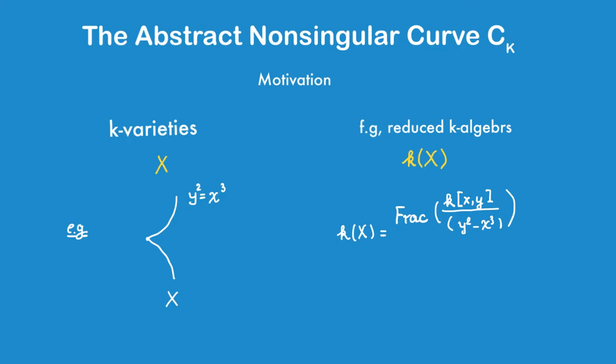To motivate this, let us fix a field k, and recall that to every k-variety X, we could associate a reduced finitely generated k-algebra, namely the function field of X.